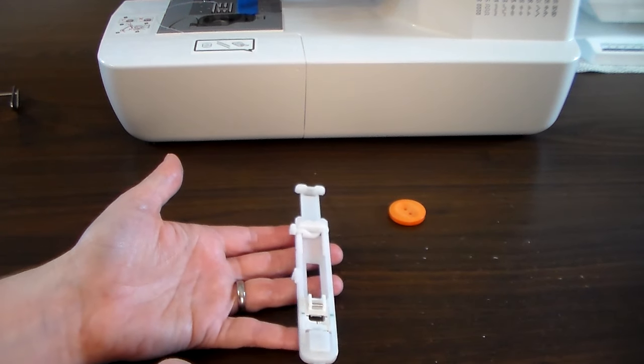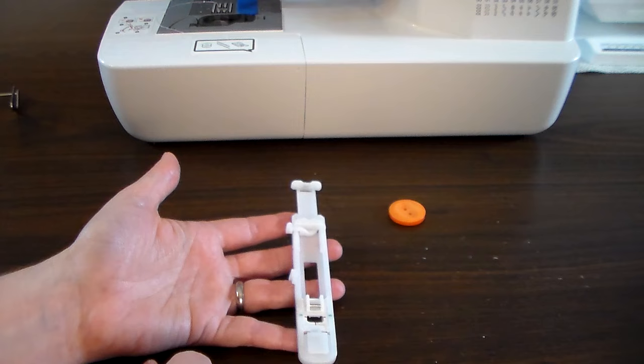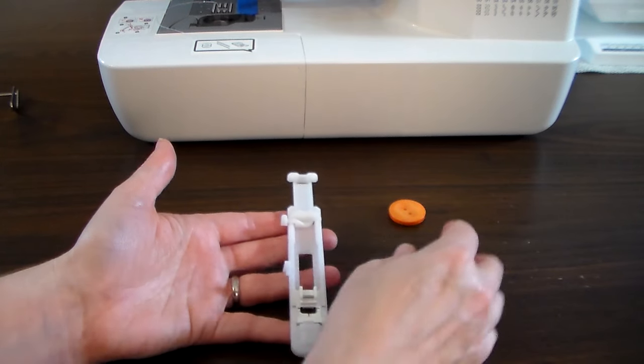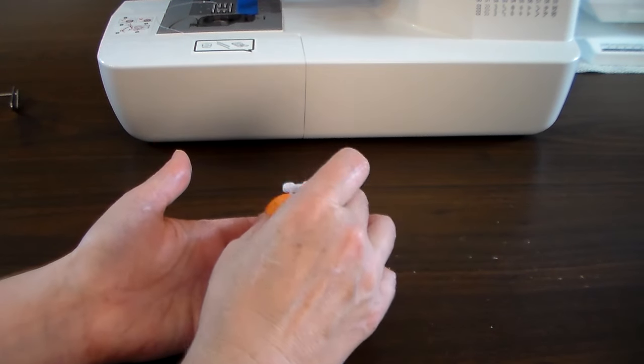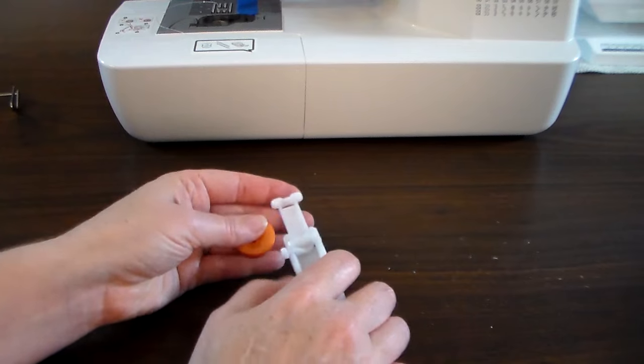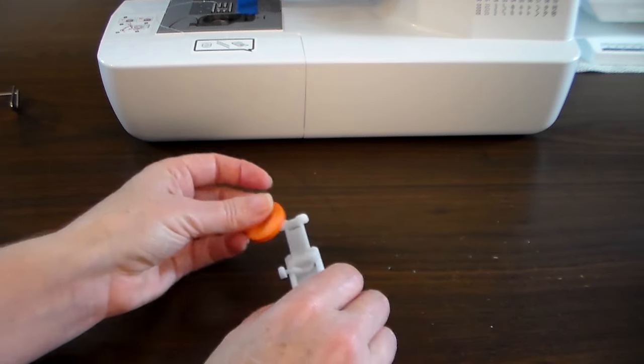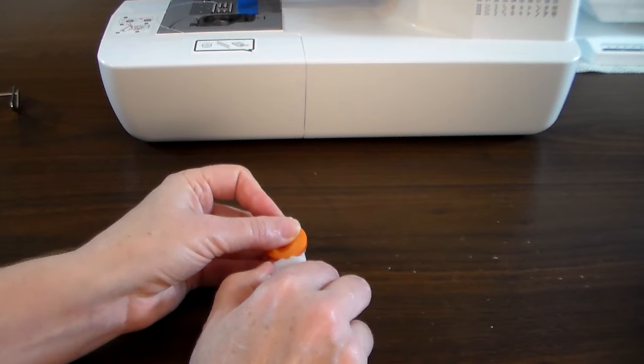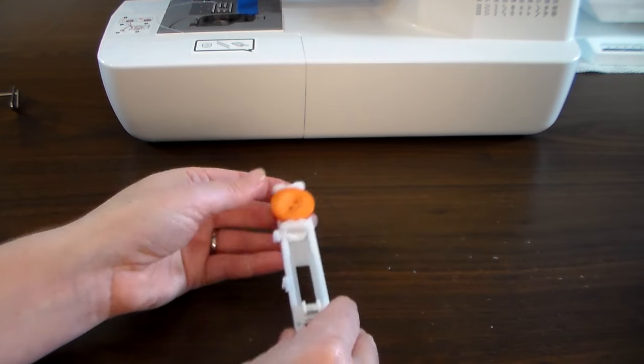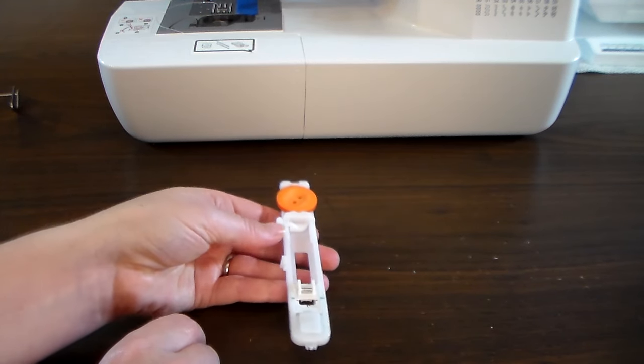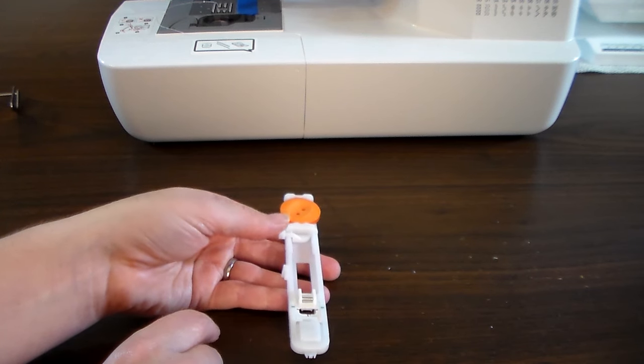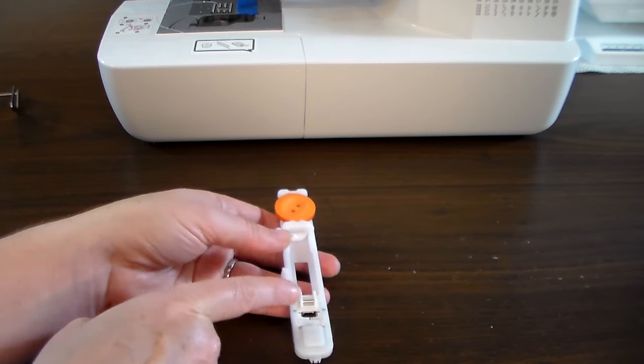Finally, this is a buttonhole foot. This is the foot you'll use whenever you need to sew buttonholes onto a garment. The way it works is this goes back and forth, and you adjust it for the size of the button you're putting in. Then you snug it down, attach it to your machine, and set your buttonhole design for the one you want.